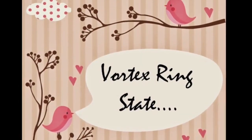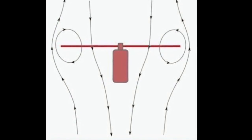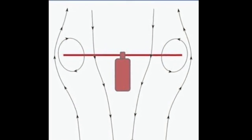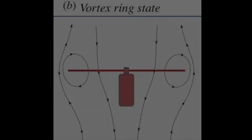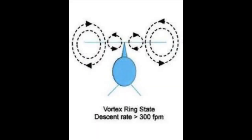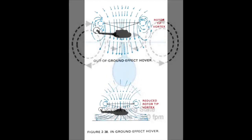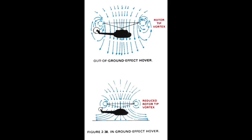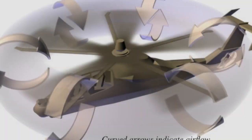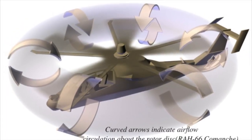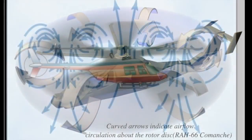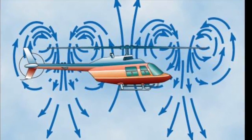Vortex Ring State. It has been assumed that there has been definite flow through the rotor with well-defined slipstream. In vertical descent, it is clear that the relative upward flow will prevent the slipstream from forming. If the relative flow becomes large enough and some air recirculates through the rotor, it is known as the vortex ring state. The vortex ring state occurs when the rate of descent is of some order of induced velocity.